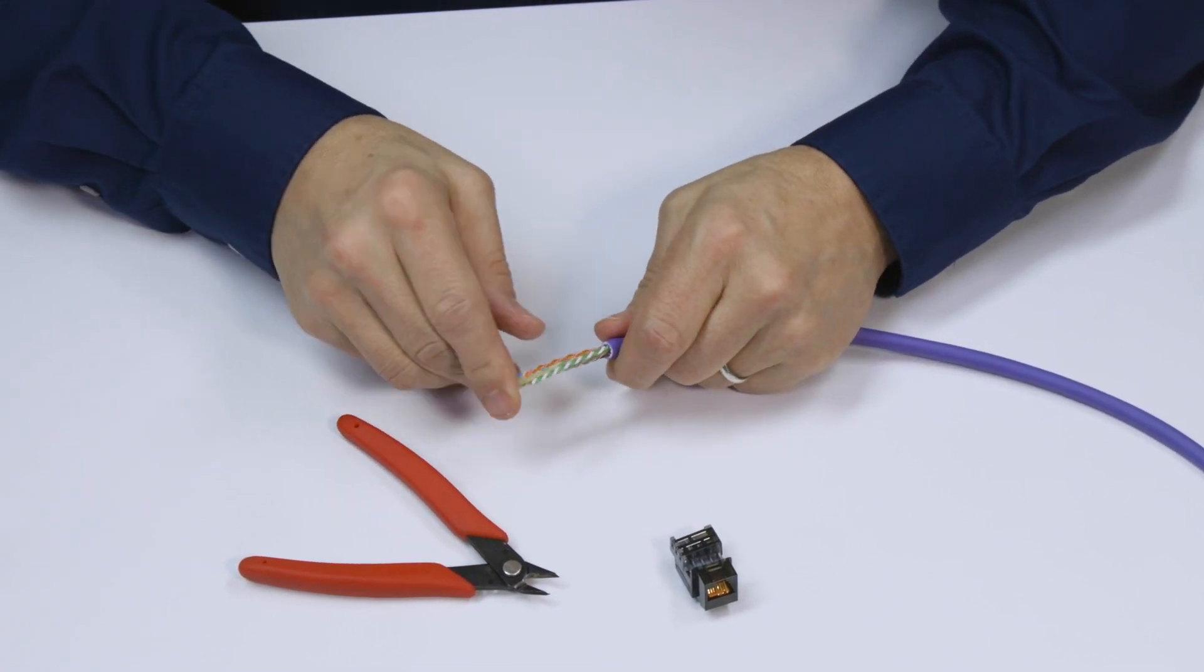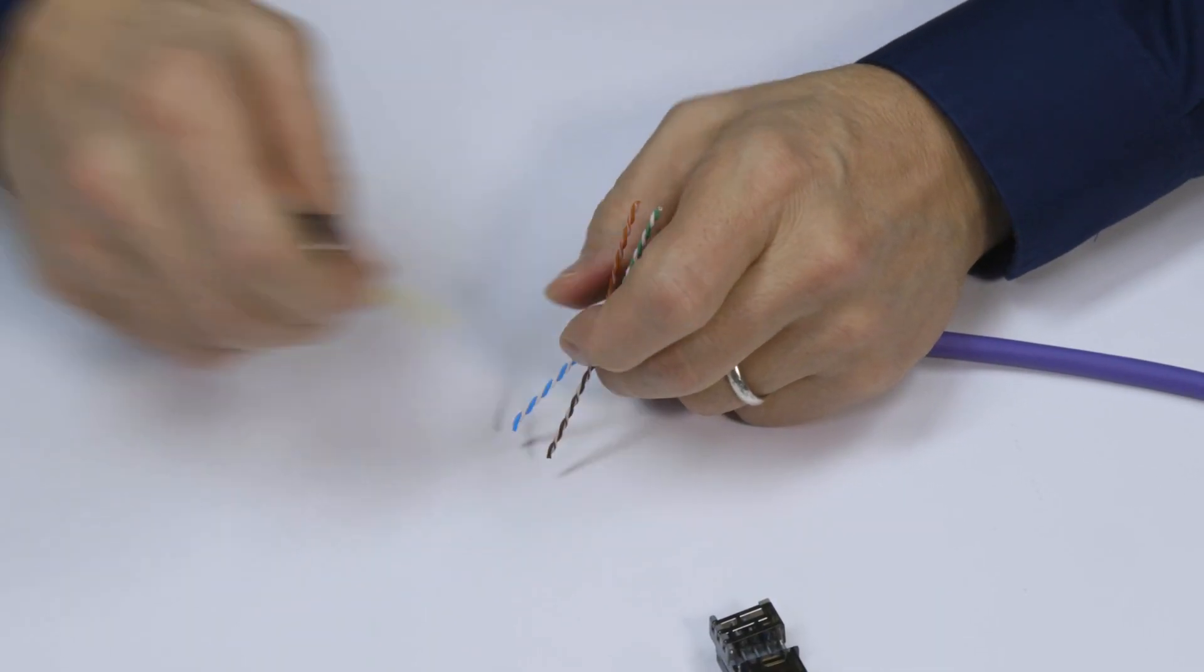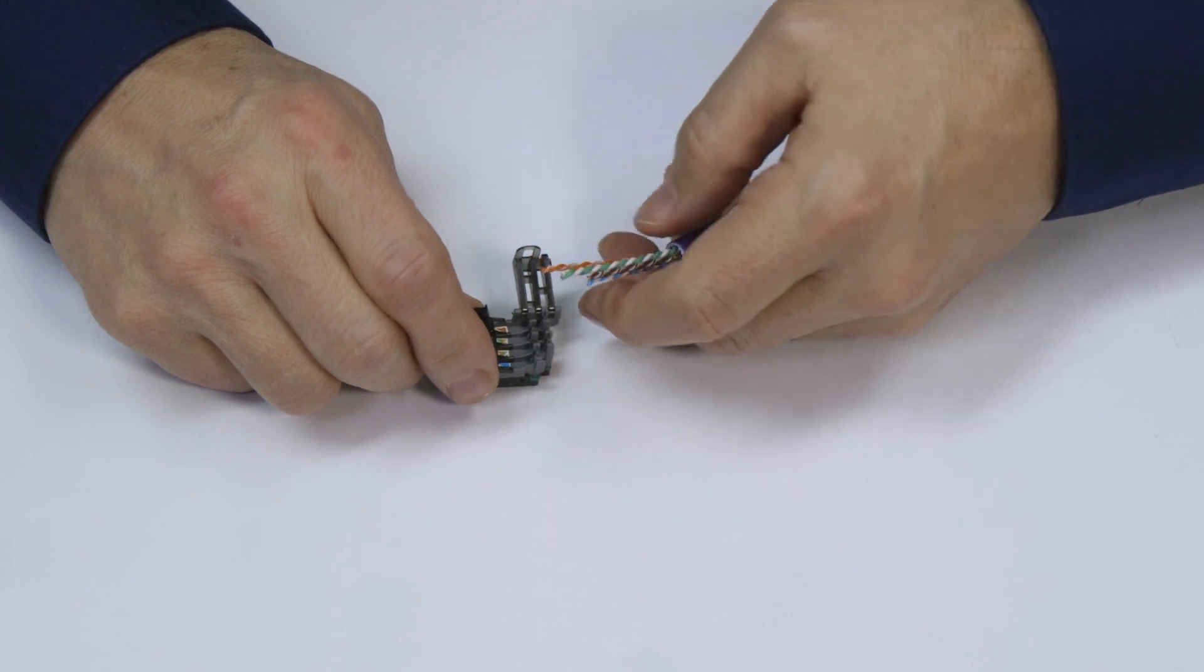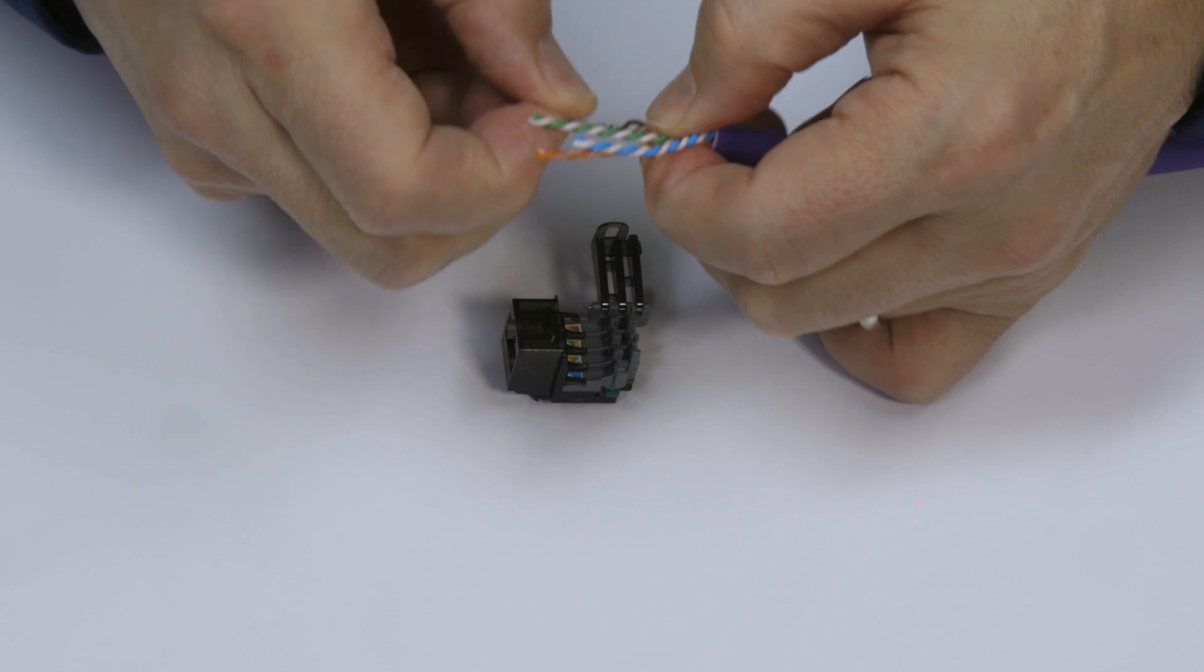Fan out the four pairs of wires and trim back the cross separator, then arrange the pairs according to the color code on the jack. There are A and B wiring options on the jack label; we will choose B wiring for this video.